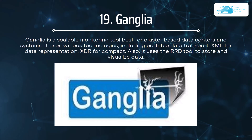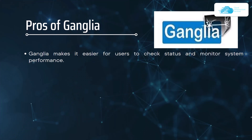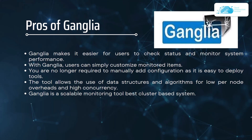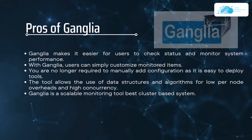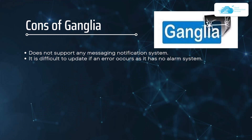Number nineteen on our list is Ganglia. Ganglia is a scalable monitoring tool best for cluster-based data centers and systems. It uses various technologies including portable data transport, XML for data representation, and XDR for compact encoding, and uses the RRD tool to store and visualize data. The pros include easier status checking and system performance monitoring, customizable monitored items, and use of data structures and algorithms for low per-node overhead and high concurrency. The cons are that Ganglia does not support any messaging notification system and is difficult to update when an error occurs as it has no alarm system.